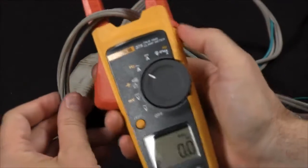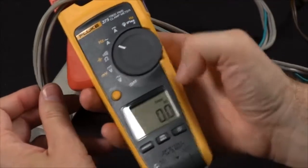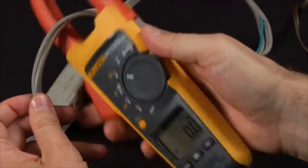A mistake that a lot of people make is trying to measure around the entire cord. You'll see that the flow going through my hot and returning through my neutral is going to cancel out, and we'll see a zero indication on the screen.